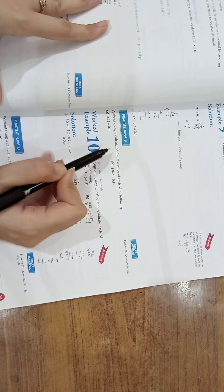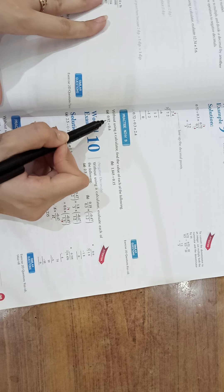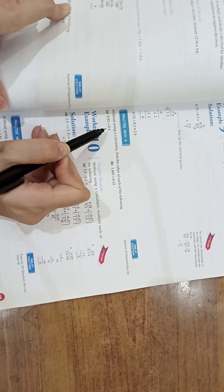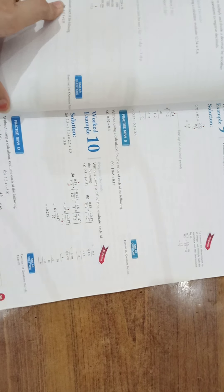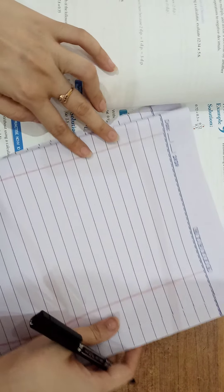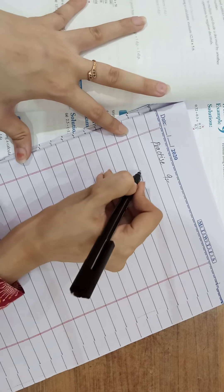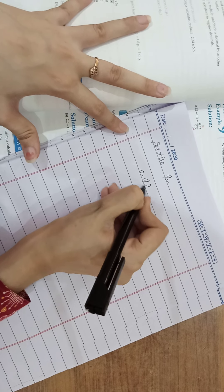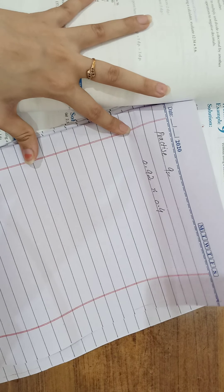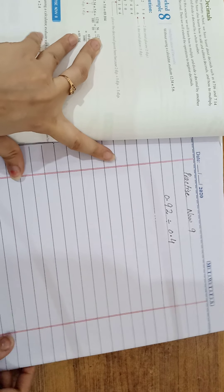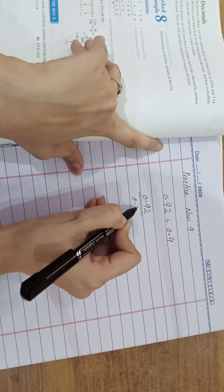Now look at question number 9. Practice now 9. Without using a calculator, find the value of each of the following. A part: 0.92 divided by 0.4. Now, division is present in front of us. Now, we have division. So how we can divide it? First of all, I will write the statement. That is 0.92 divided by 0.4. You know, division means in fraction form: 0.92 over 0.4.